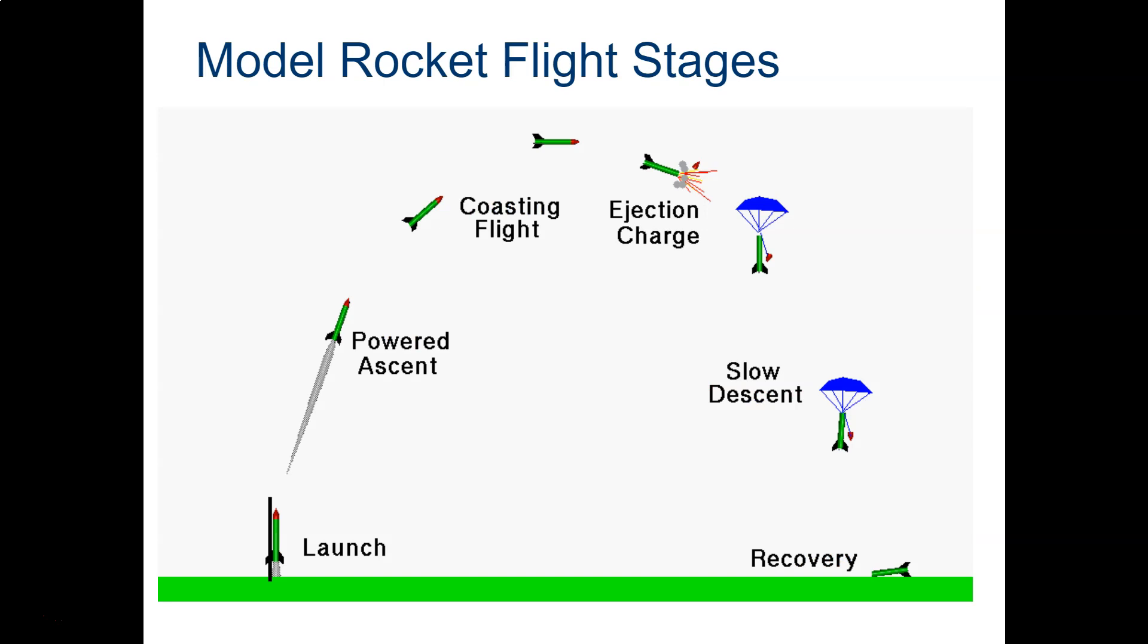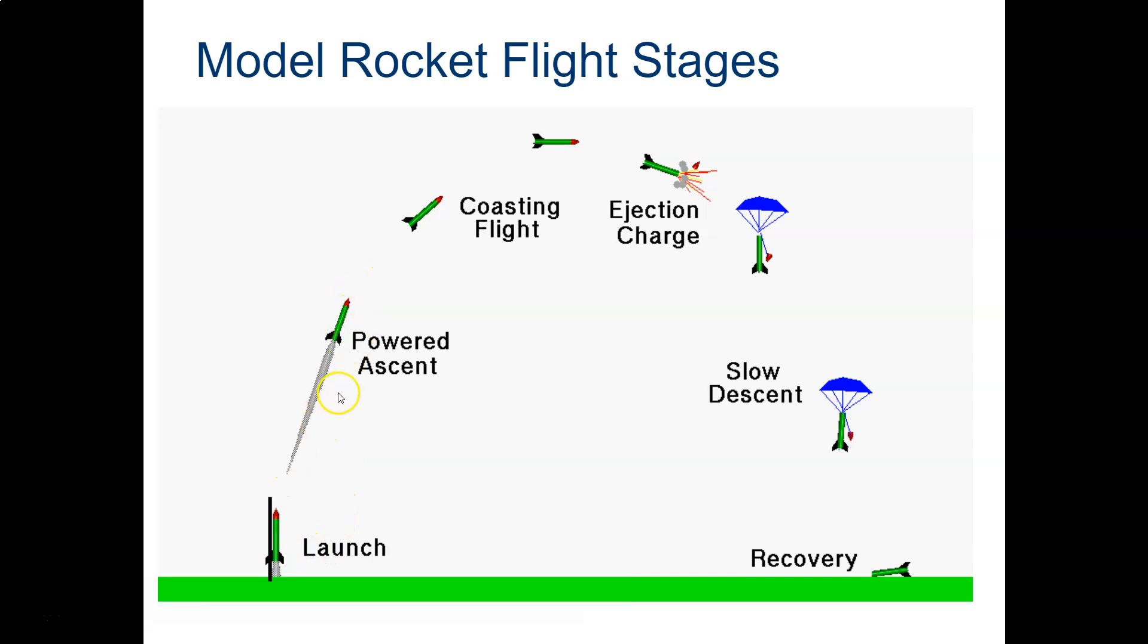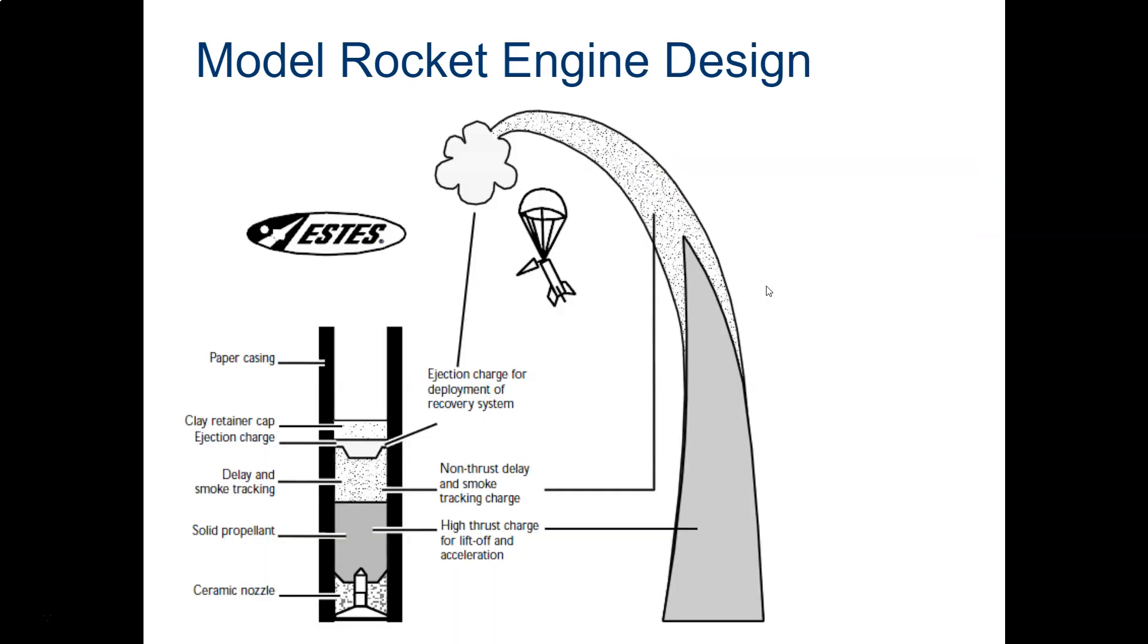Model rocket flight stages—we're actually going to come back to this. I left this slide in just so you can see kind of what's coming up. You should know what each stage is. When we launch, this is the powered part of the flight, when the rocket engine is on, when it's thrusting. It's going to coast after the engine cuts off, it's going to eject a charge, and then come down.